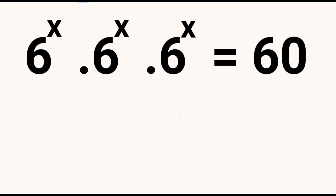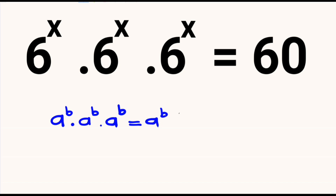Suppose that we had a raised to the power b, multiplied by a raised to the power b, multiplied by a raised to the power b. This will be equal to a raised to the power b plus b plus b, which is equal to 3b.